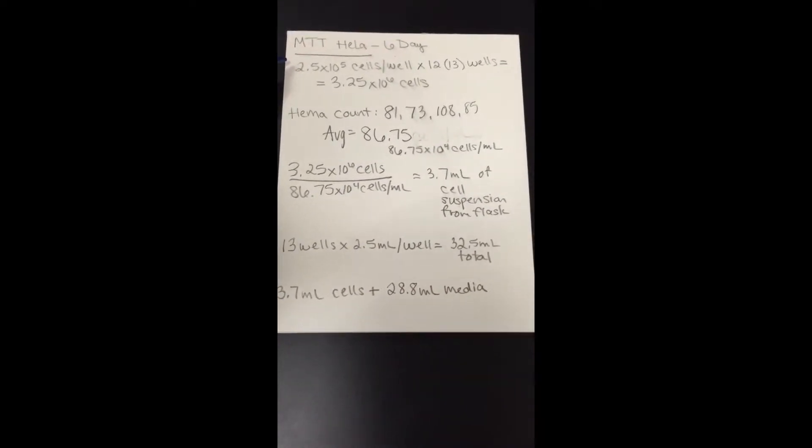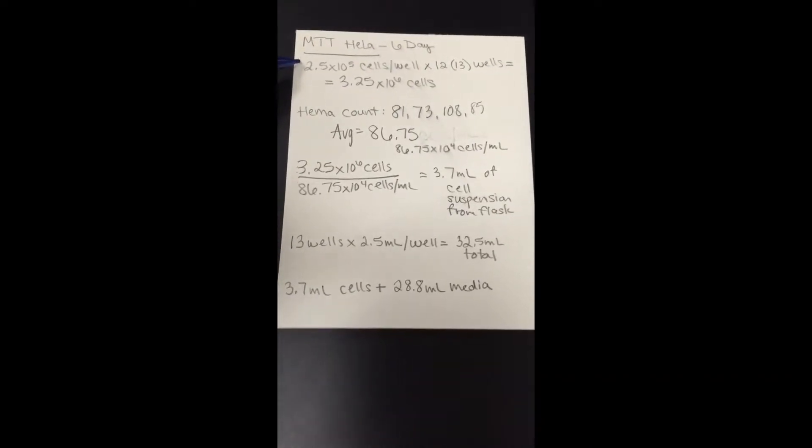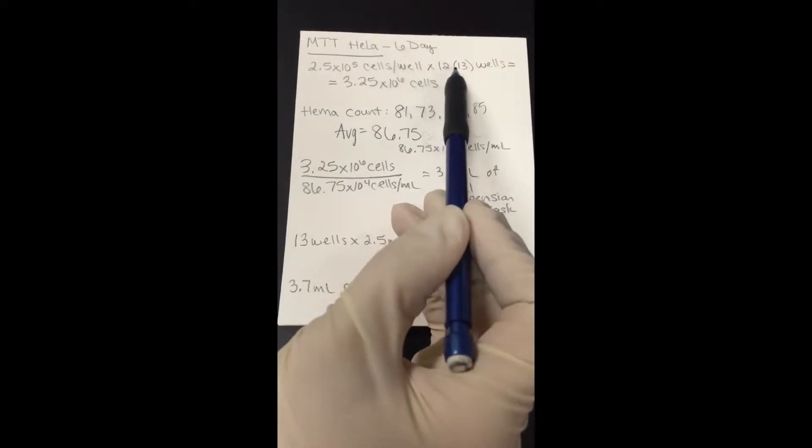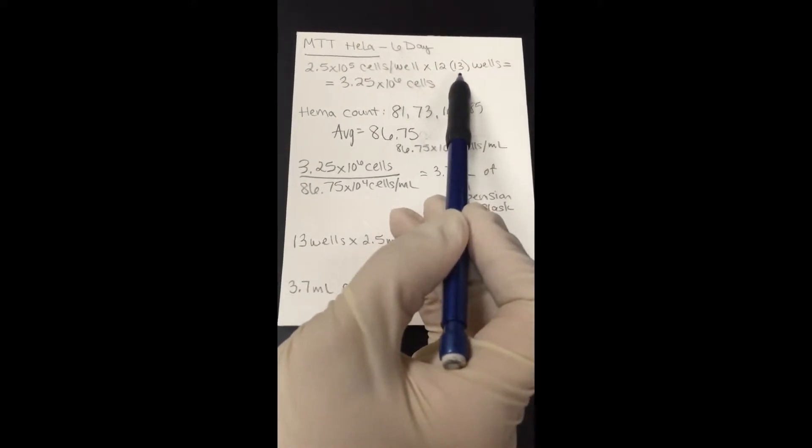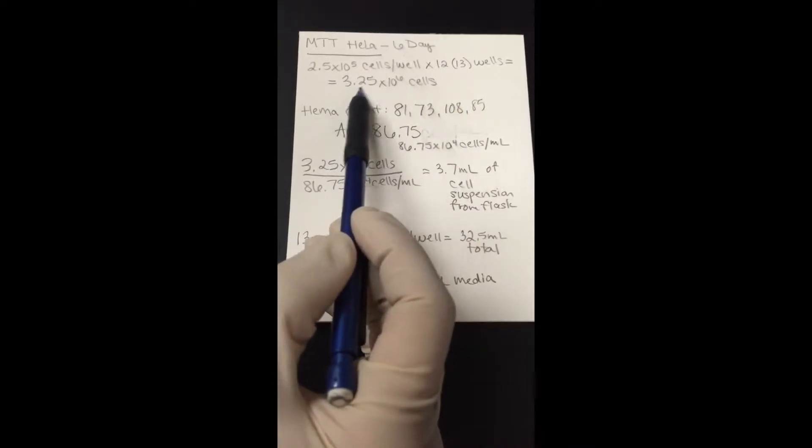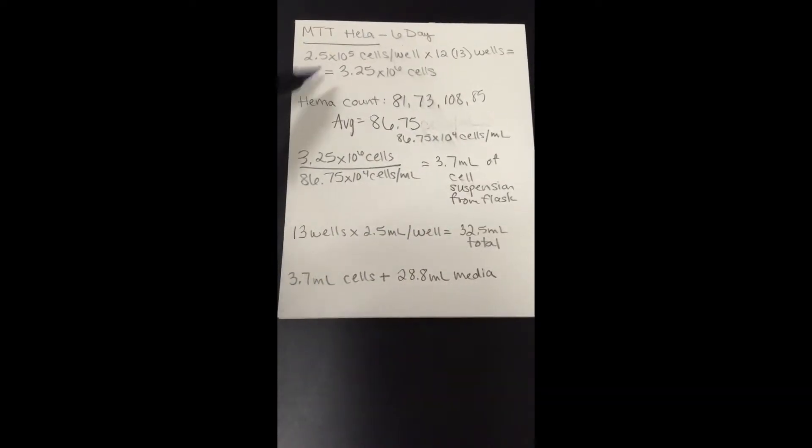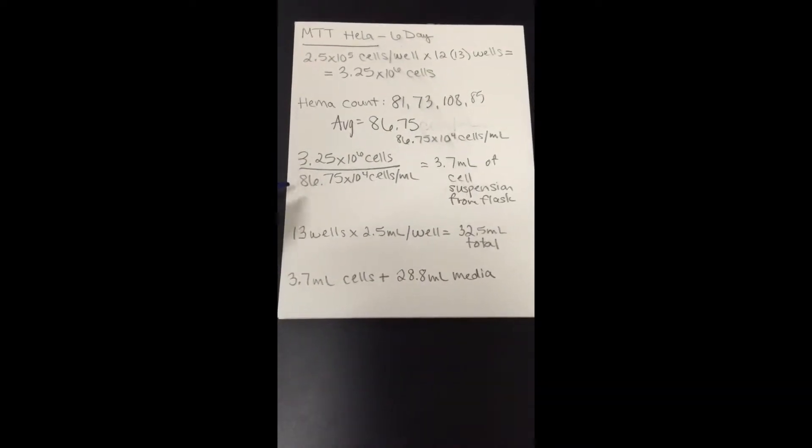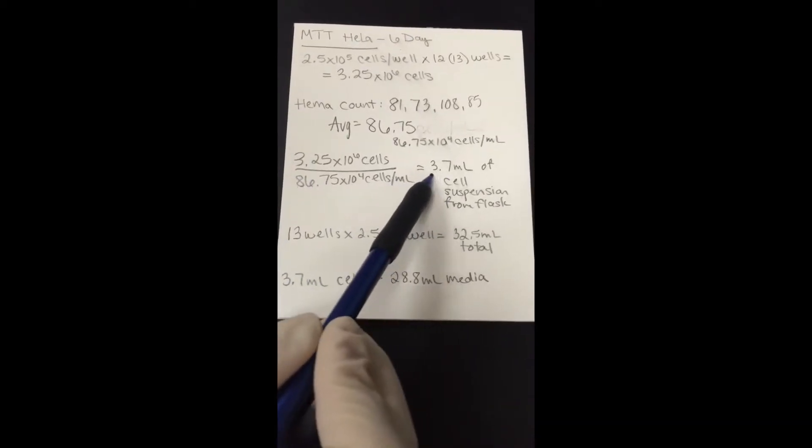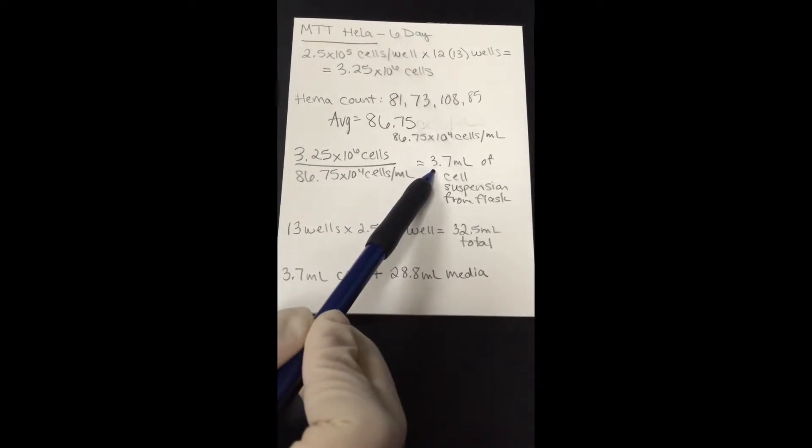So up here, I know that our concentration of cells we want per well is 2.5 times 10 to the 5th. I'm doing 12 wells, but I want to calculate for one extra. So I did my concentration times 13 wells equals 3.25 times 10 to the 6th cells total that I need. So I'm going to take that total number of cells that I need and divide by our average, and that's going to tell me how many milliliters I need to take from the flask. And I got 3.7 milliliters.